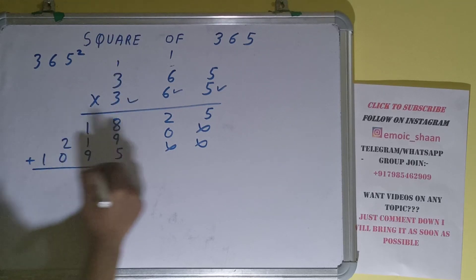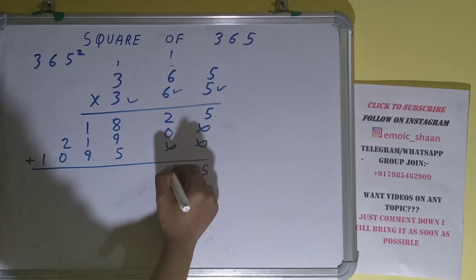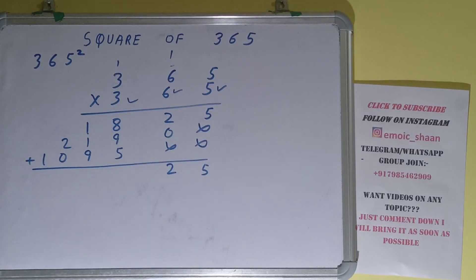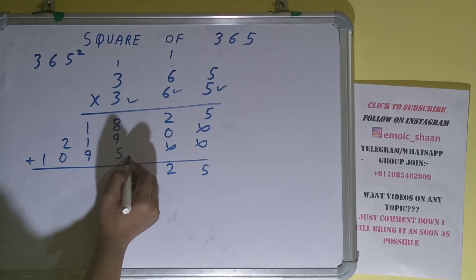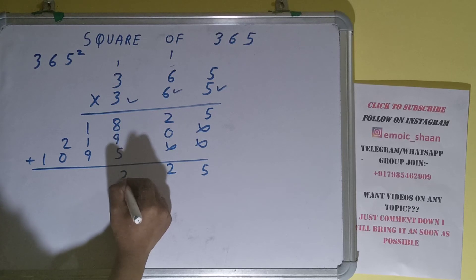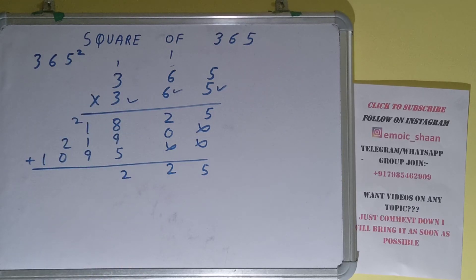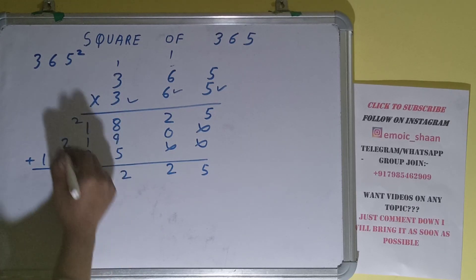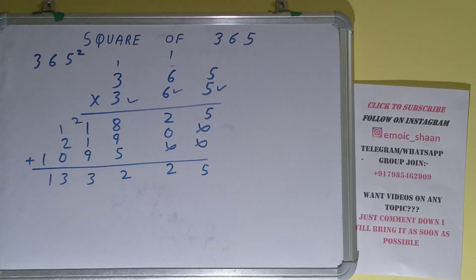Add everything: 5, 2, 7 plus 2 is 9, 7 plus 5 is 22, carry 2. 10, 11, 12, 13, carry 1. 3, 1. Okay, so the answer will be 133,225.